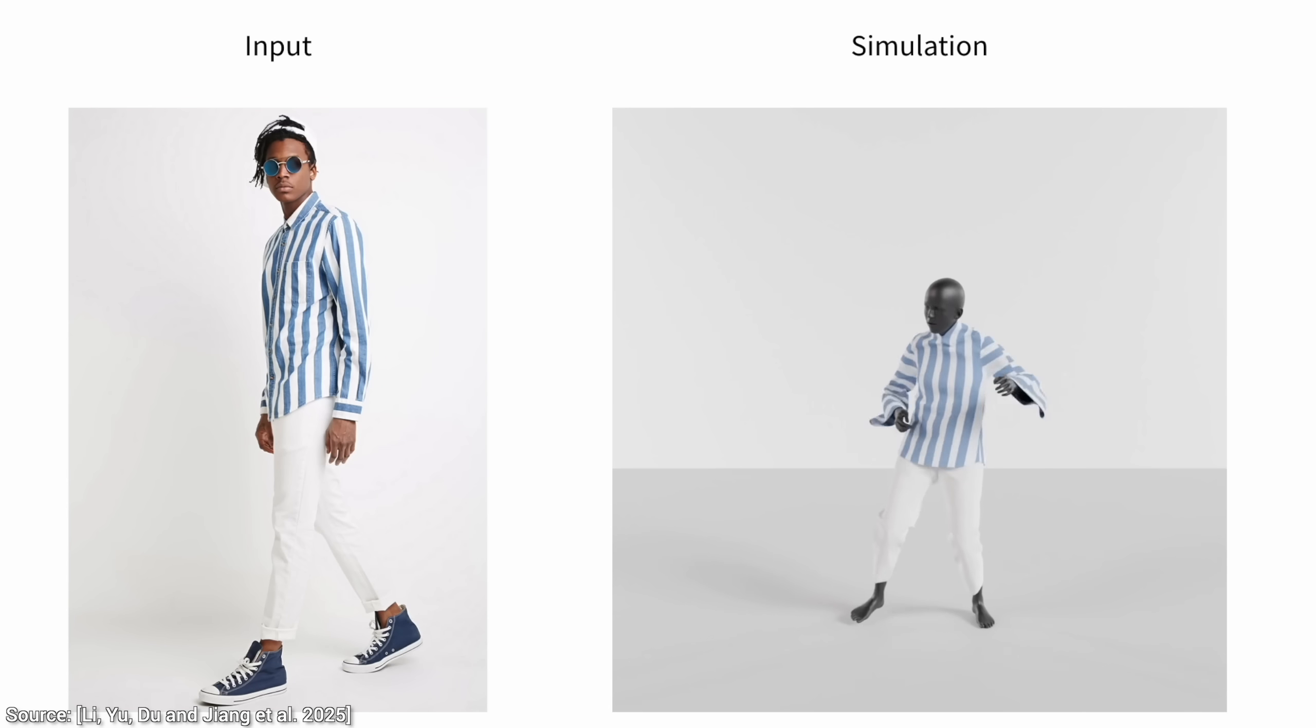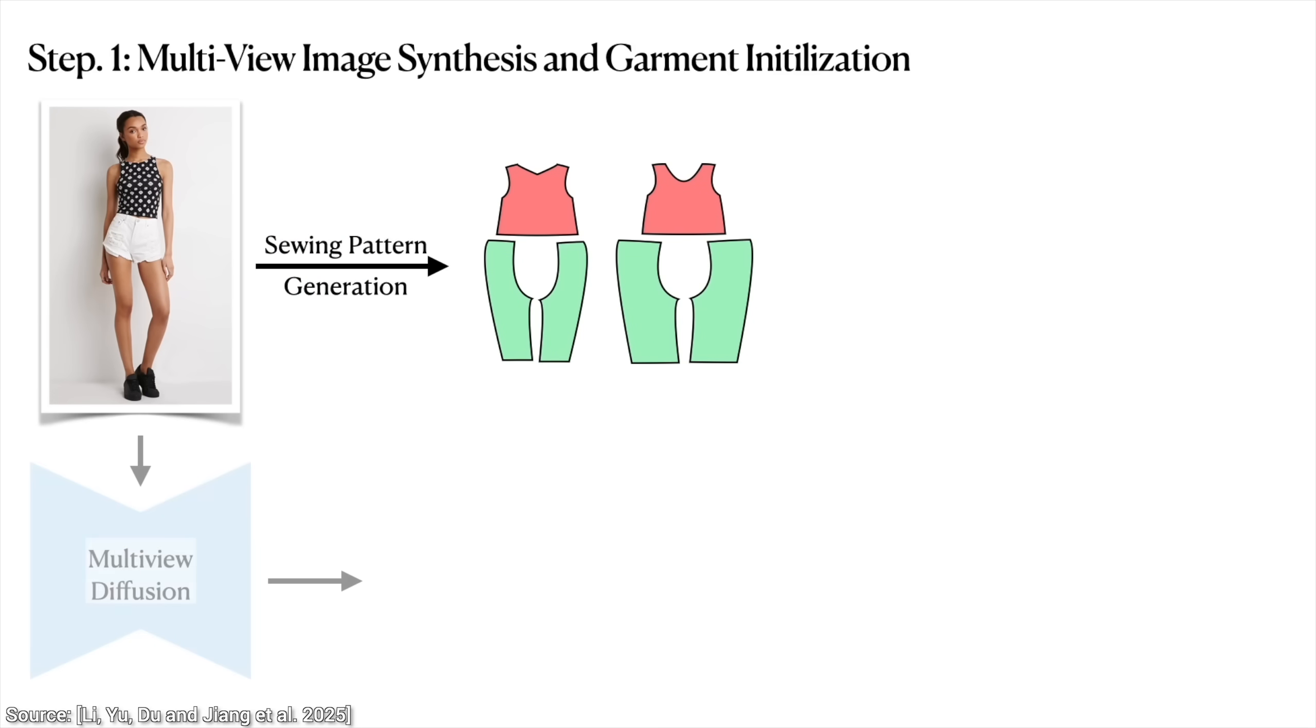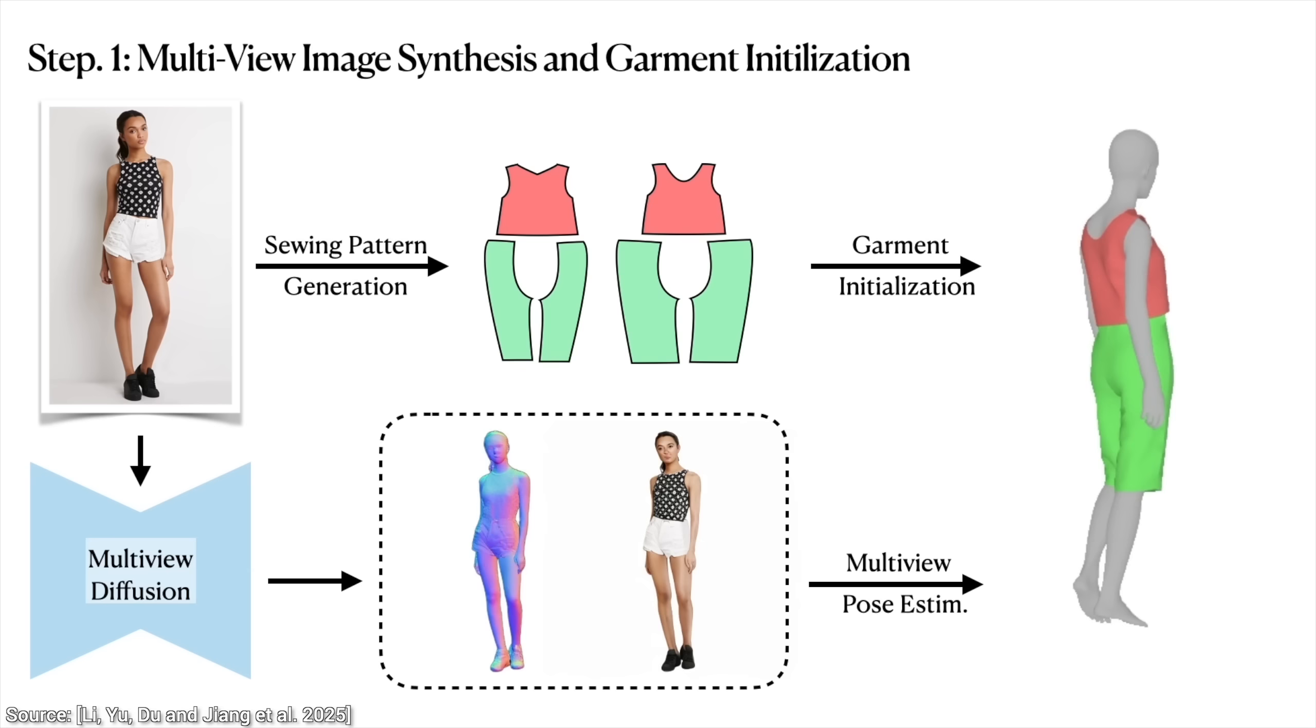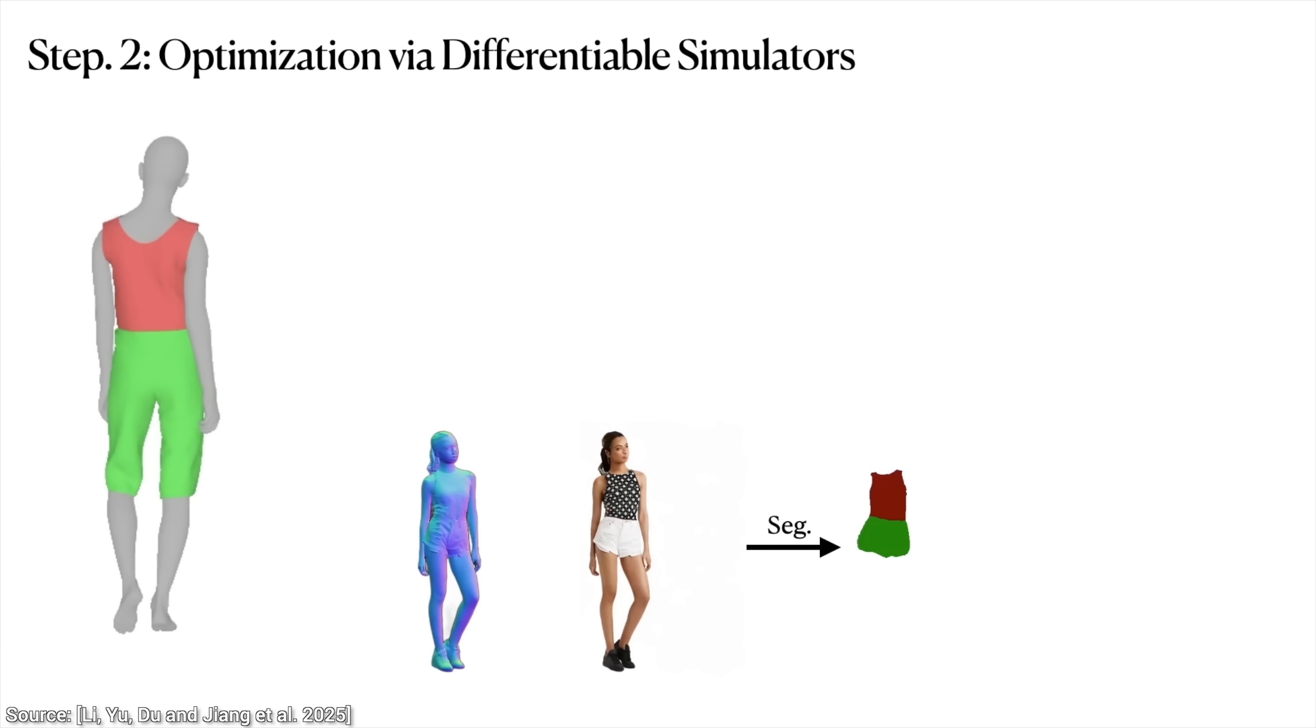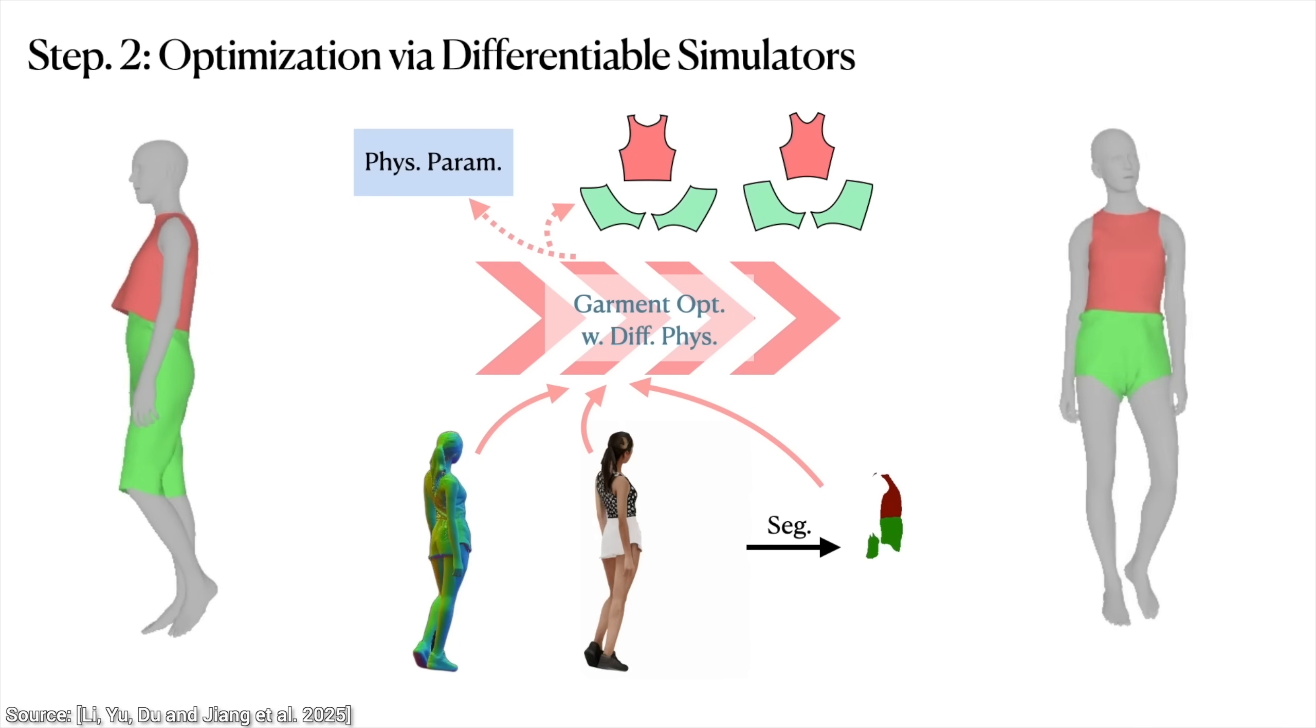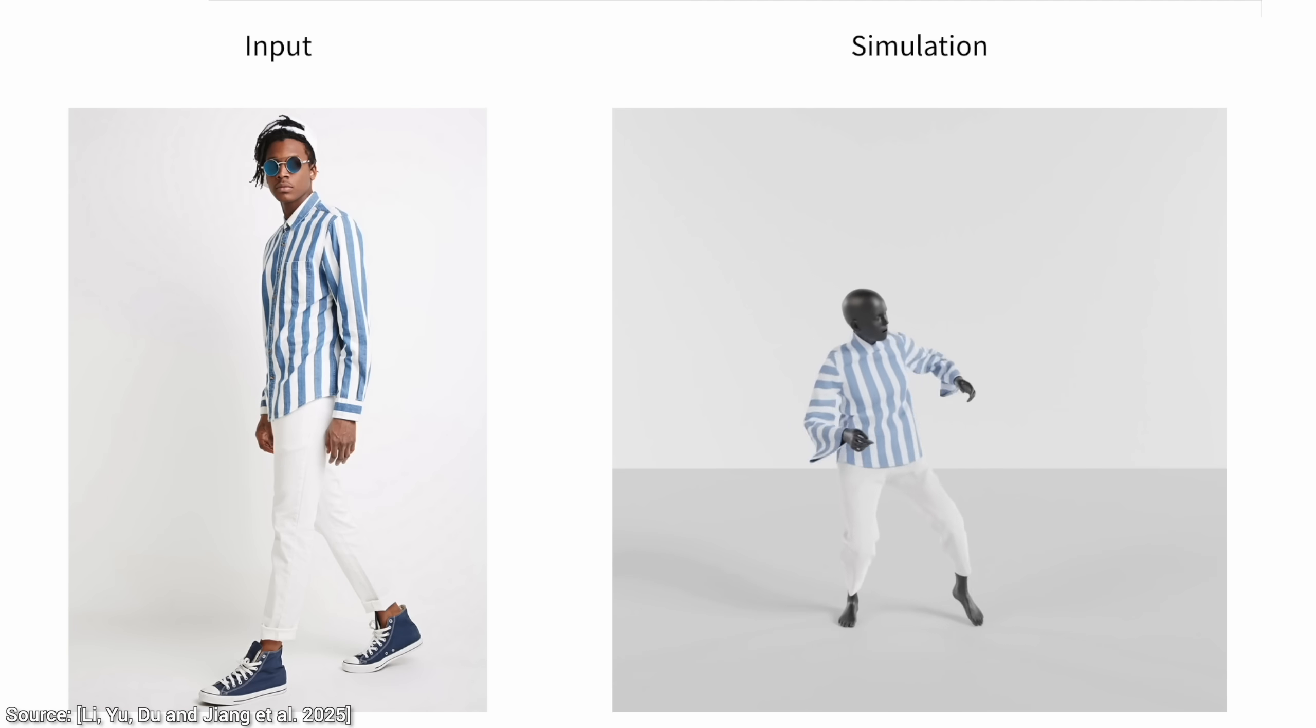First, the AI part. They use something called multi-view diffusion guidance. You show the model one picture, and it imagines what you'd look like from every angle. Left, right, back, top. As if the AI walked around you taking photos. It's basically an AI fashion paparazzi, but one that doesn't shout your name while you're eating. No, no.